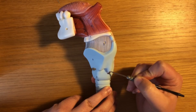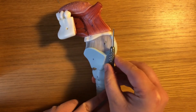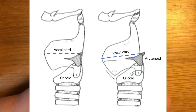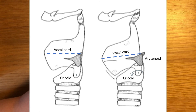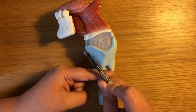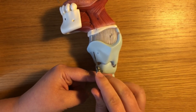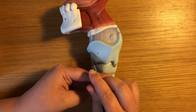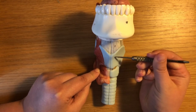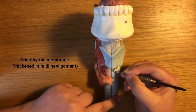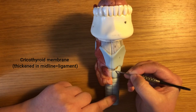The cricothyroid joint is important for allowing a tipping forward of the thyroid cartilage on the cricoid cartilage. Imagine the cricoid cartilage stays horizontal — a particular muscle can act to tilt the thyroid cartilage forward at this joint. That has a role in increasing tension of the vocal cords, which have an attachment on the inner surface of the thyroid cartilage. Connecting the thyroid cartilage to the cricoid cartilage, we have the cricothyroid membrane, which is slightly thickened in the middle and there called the cricothyroid ligament.